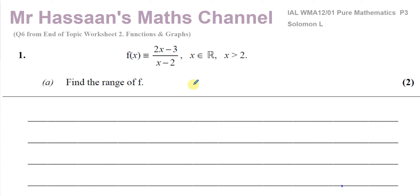Whenever you want to find the range of a function, making a sketch will be really useful. When you have a function like this, which is a reciprocal function — especially when the domain is restricted to values of x greater than 2 — we have to be careful when finding the range, because the restriction might make it different from what we initially think. So I'm going to rewrite this function in a form that's easier to sketch. As we can see, this is an improper fraction, so I'm going to write it as a mixed number.